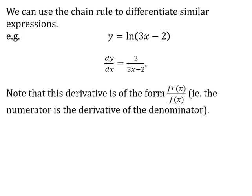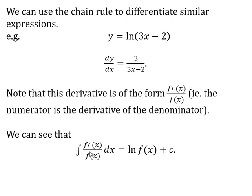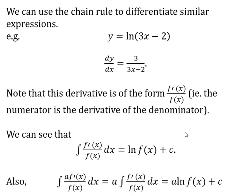This derivative is of the form f′(x) over f(x), so f(x) at the bottom is (3x − 2), and at the top we've got the derivative of that function, which is 3. So what we can say is that if we integrate this type of function, we get ln of the denominator plus c. We can extend that because constants can be taken out, so if the numerator is a multiple of the derivative of the denominator, the whole integral would be a·ln|f(x)| plus the constant.